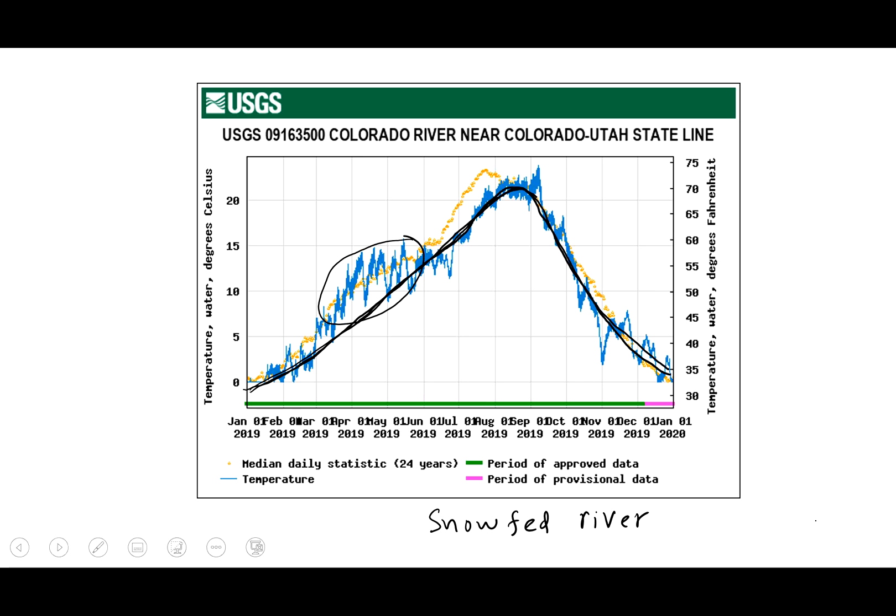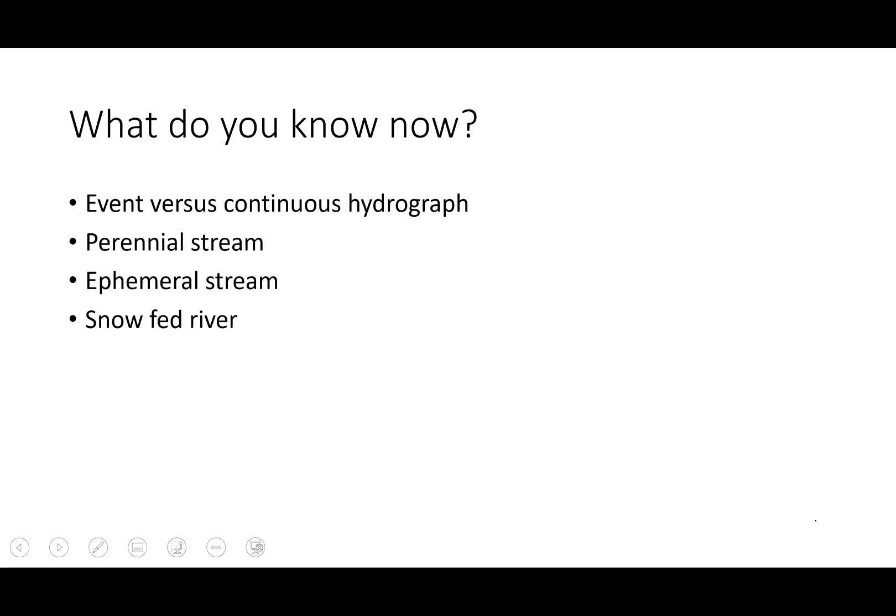So that's all for this clip. What we learned here is how to describe event and continuous hydrographs, and how continuous hydrographs look for a perennial stream, an ephemeral stream, and a snow-fed river. In the next video, we are going to talk about base flow and base flow separation. I hope you understand all of this — if not, feel free to email me. See you next time, bye.